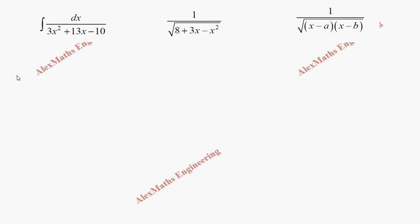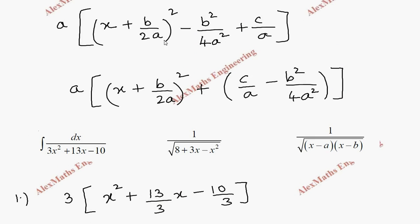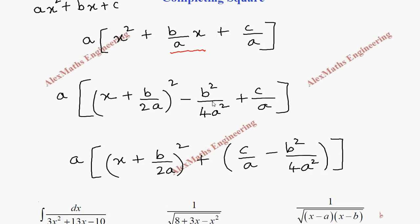In the first problem, we take 3 as common, so it becomes x² + (13/3)x − 10/3. As discussed, we write x and the same sign, then half of 13/3 is 13/6, put a whole square, then subtract the square of 13/6, just as we subtracted the square of b/2a as minus b²/4a².